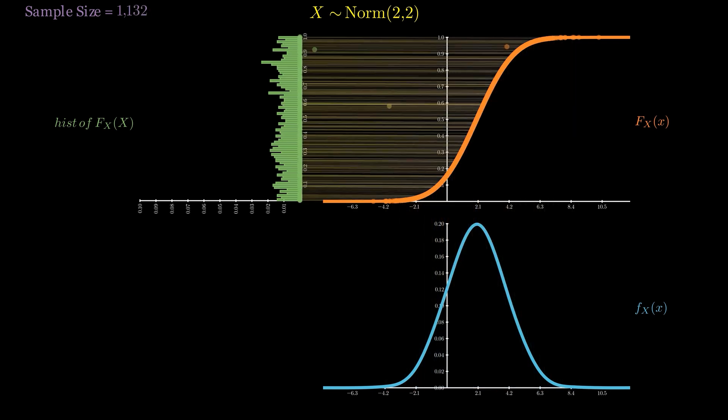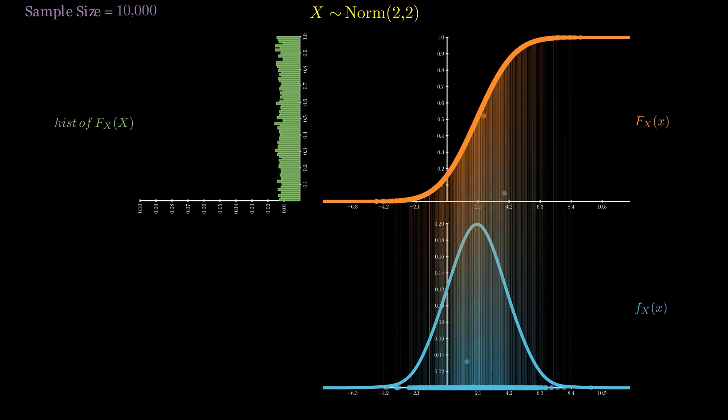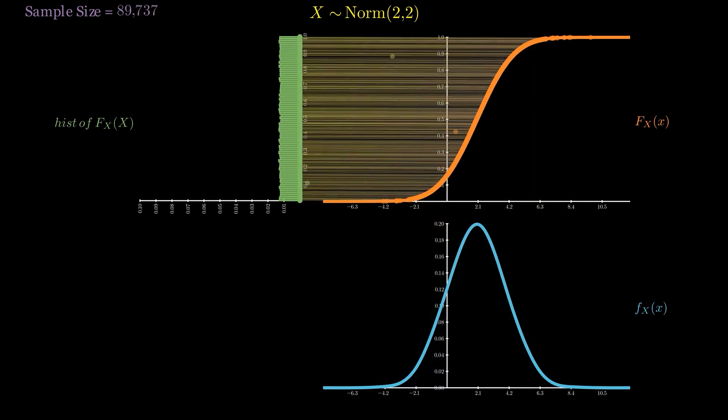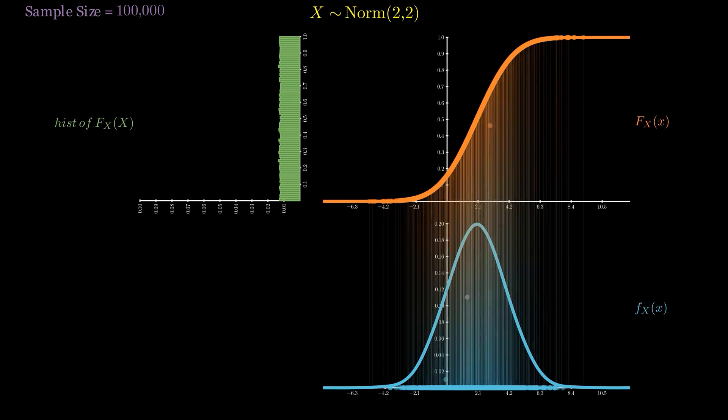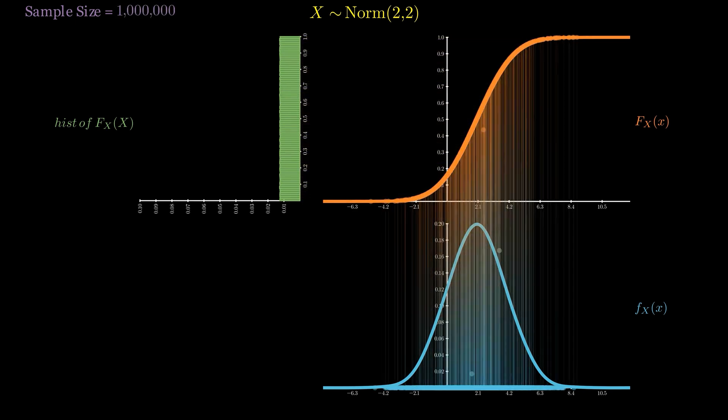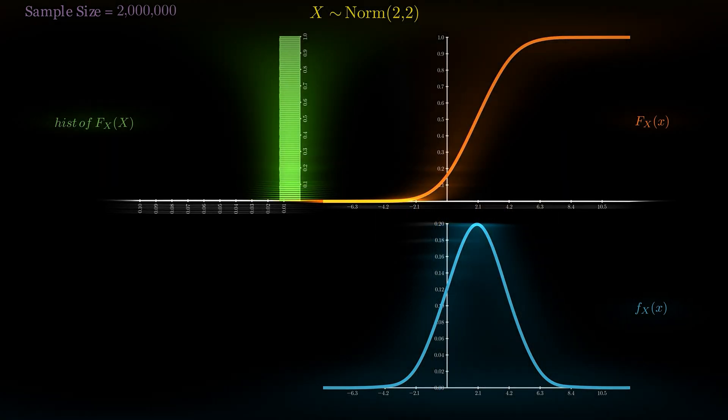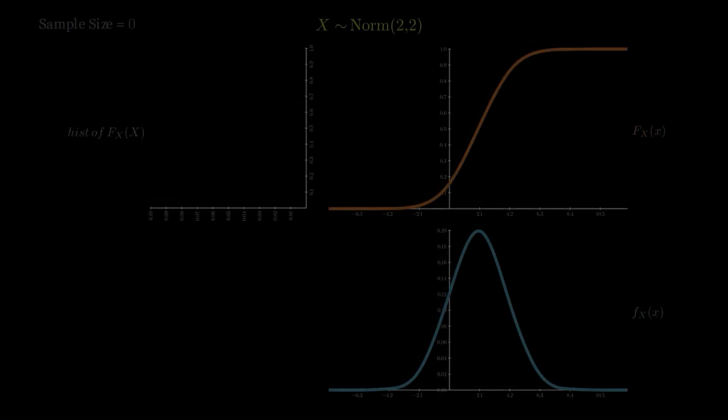But the truly remarkable thing is the absolute generality of this result. X can come from any distribution whatsoever, you name it, but after plugging it into its own CDF, we always, always end up with the standard uniform variable. This is nothing short of incredible.